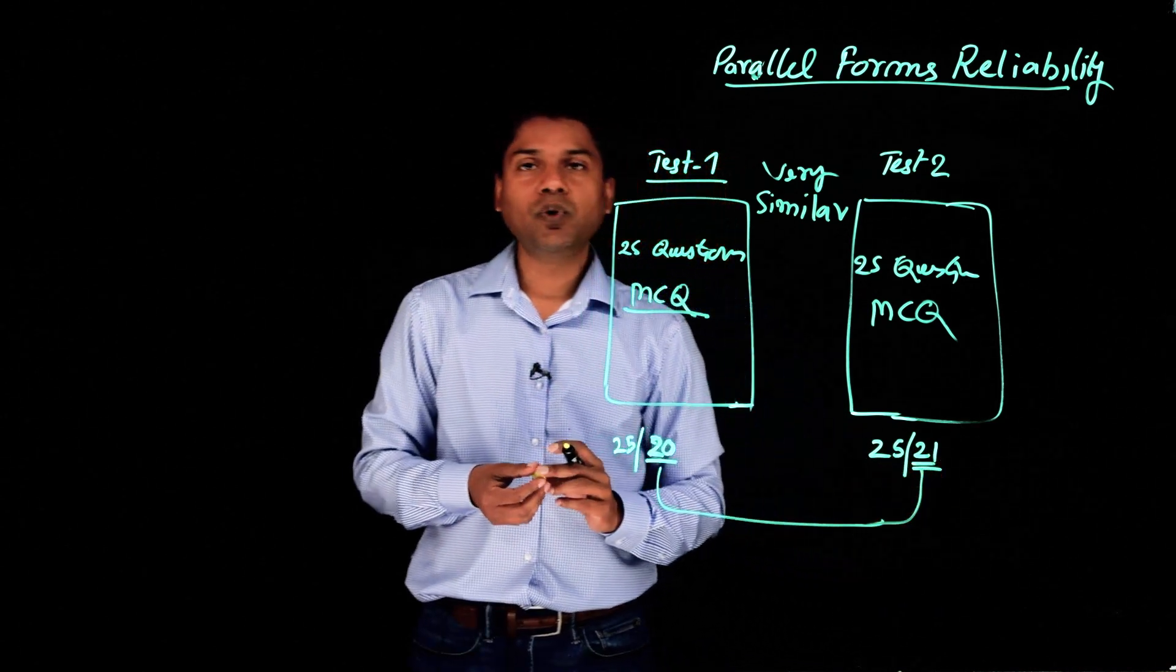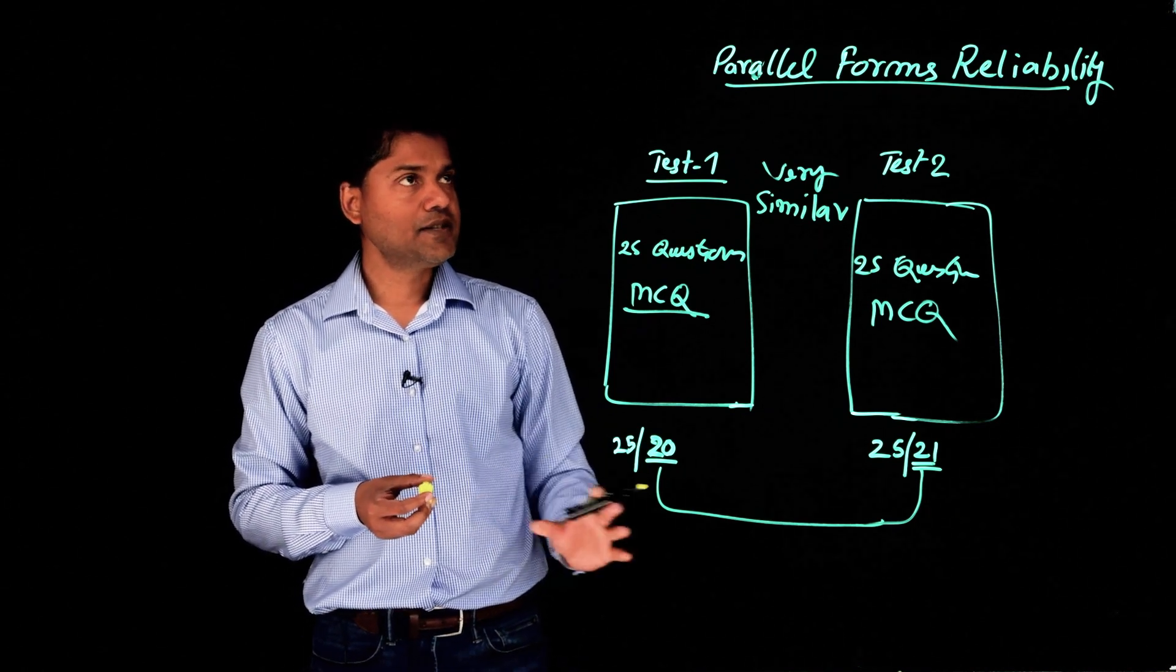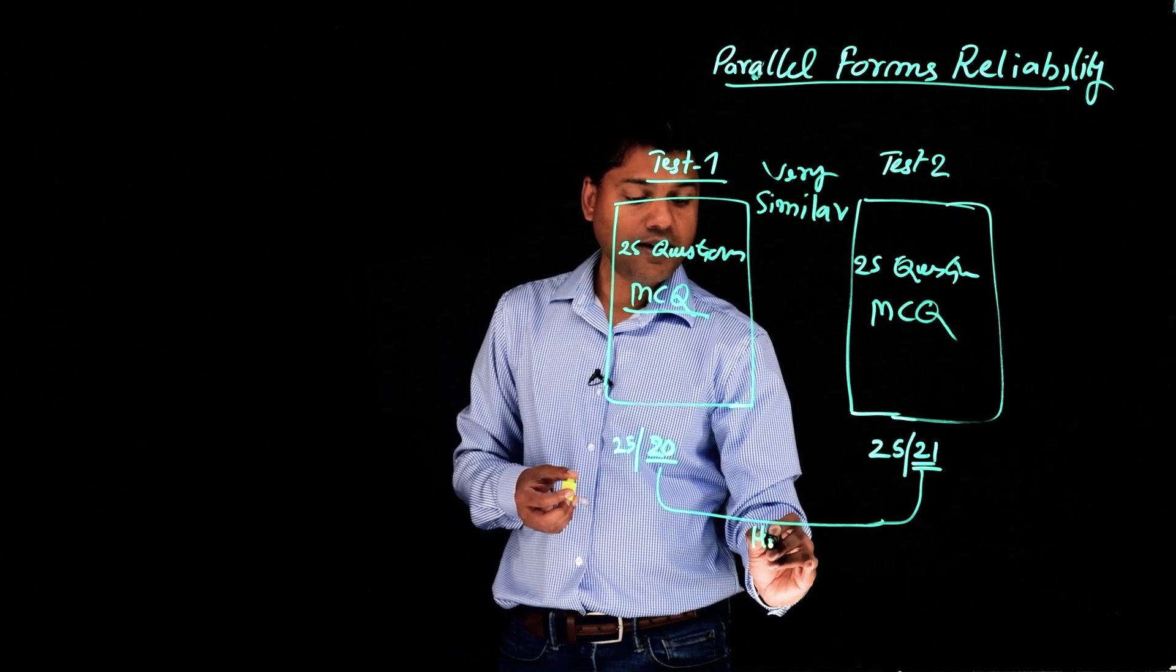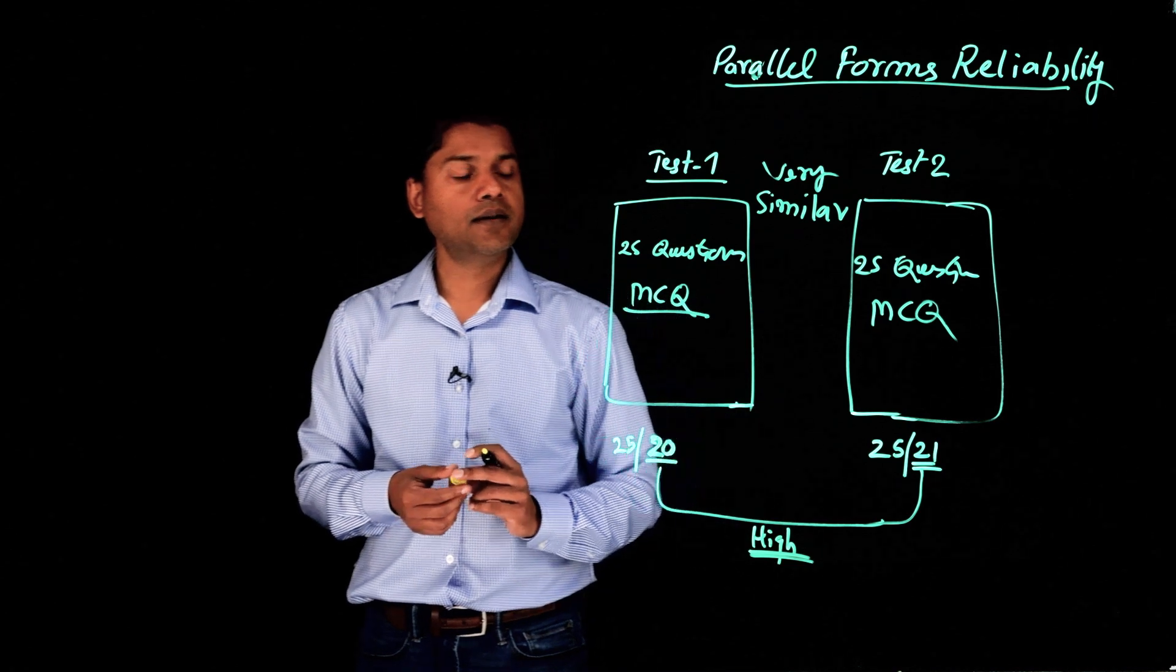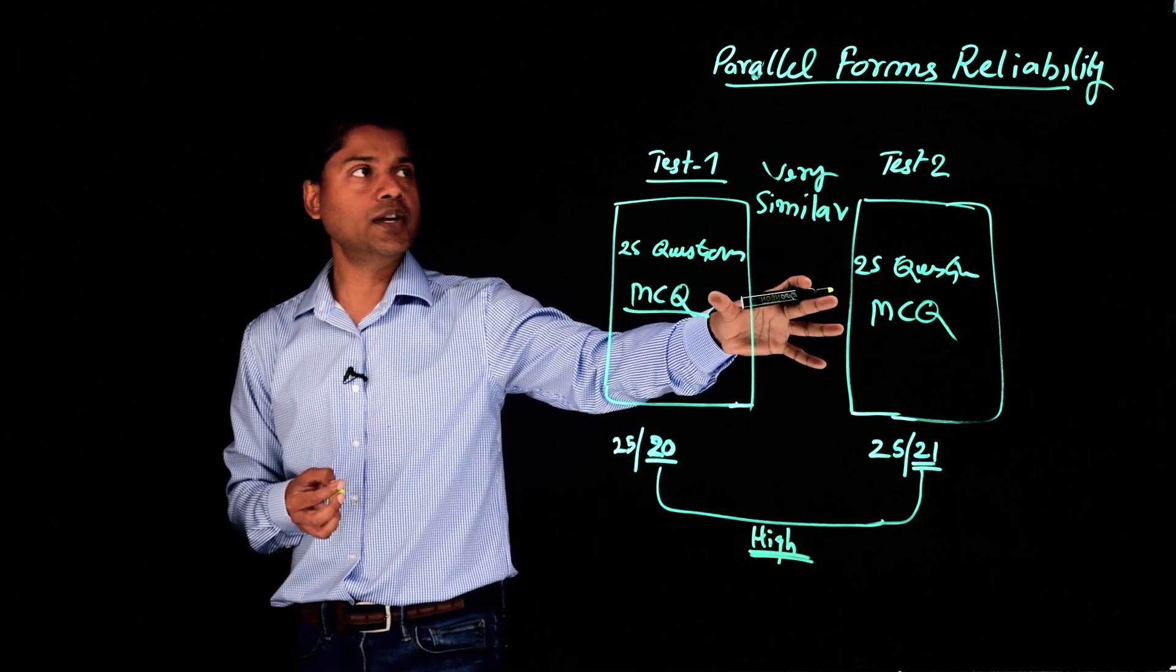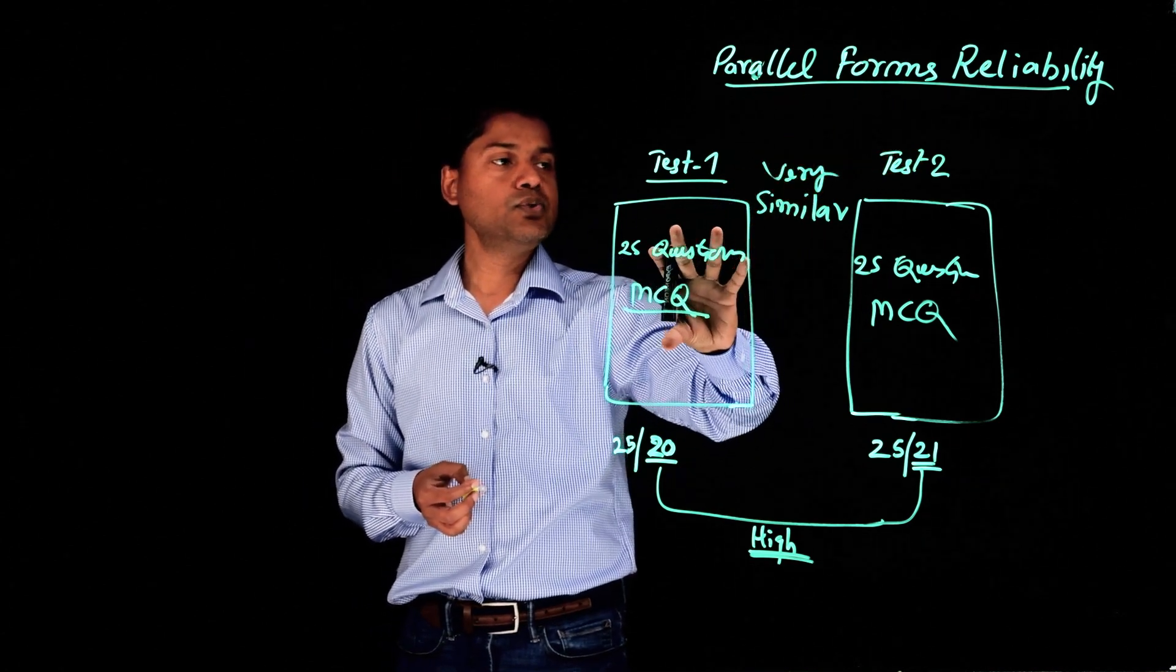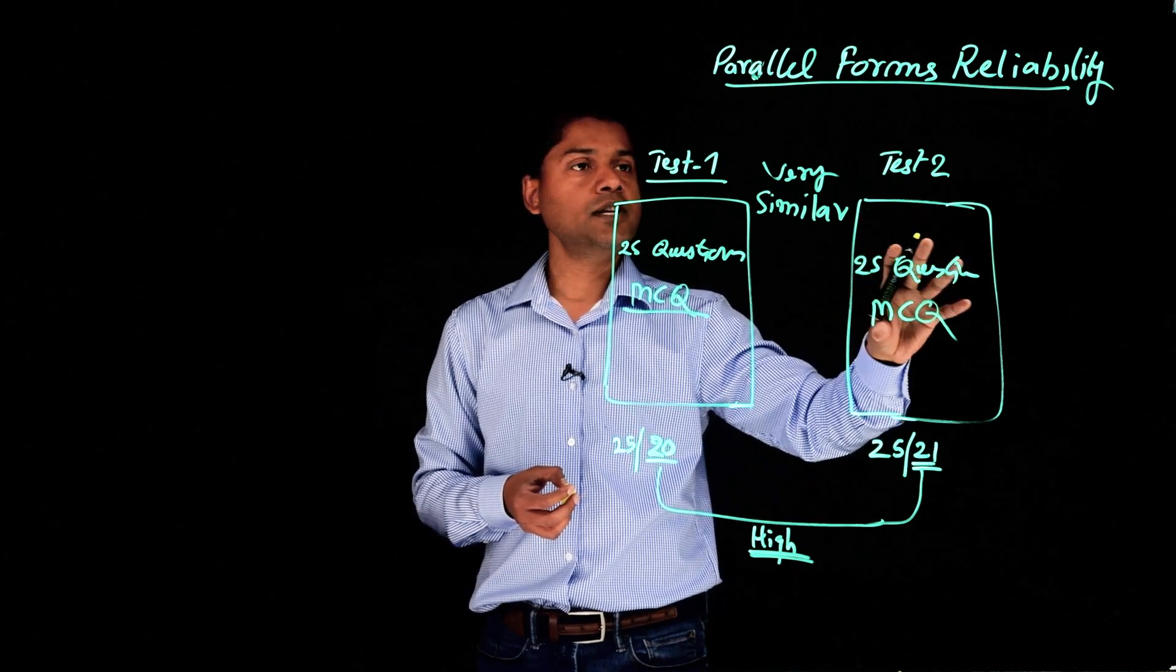What do you think? 20, 21. It seems that they are similar. So we could say this time, the correlation is high. So we could say that these two tests are highly correlated, and that's why we call it parallel forms. Parallel forms because these two tests are very, very parallel, same structure, measuring the same concept.